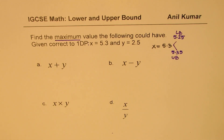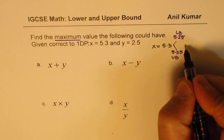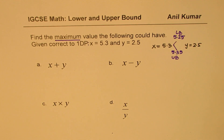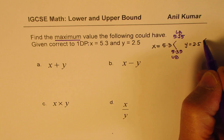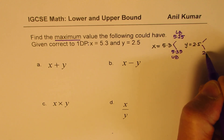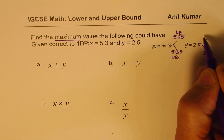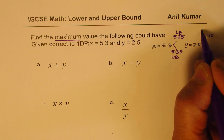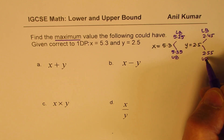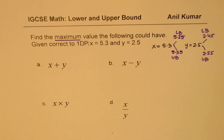Now let's also do this for Y, which is equal to 2.5. For Y, the values are again to one decimal place. Adding and subtracting 0.05, we get the upper bound of 2.55 and the lower bound of 2.45. So that is the lower bound and this is the upper bound — these are the values with which we can work to figure out the maximum possible value.